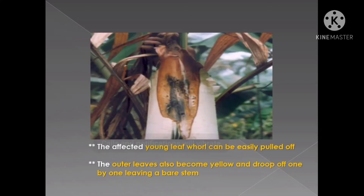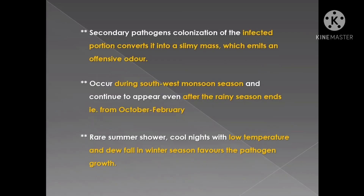The affected young leaf whorls can be easily pulled off from the palm. The outer leaves are also affected; they become yellow and droop off one by one, leaving a bare stem. Secondary infections are very common during bud rot disease. As a result, the infected portion is converted into a slimy mass which emits an offensive odor.